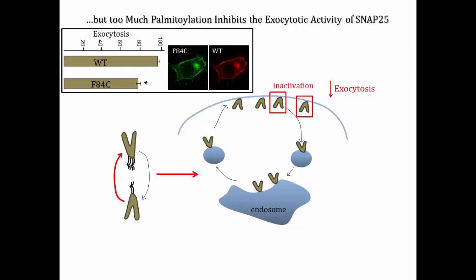So overall, palmitoylation serves as a dynamic and flexible modification that regulates membrane binding, cycling of SNAP25 between plasma membrane and endosomes, and the precise microlocalization of the protein — all of which are predicted to provide novel mechanisms to control SNAP25 function.